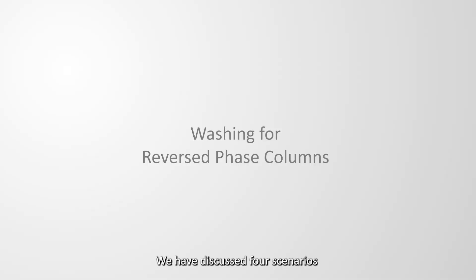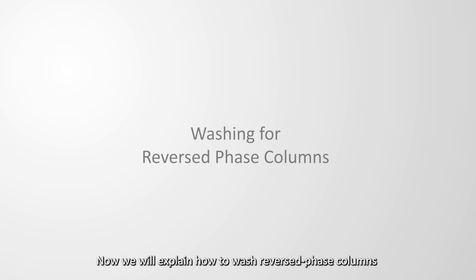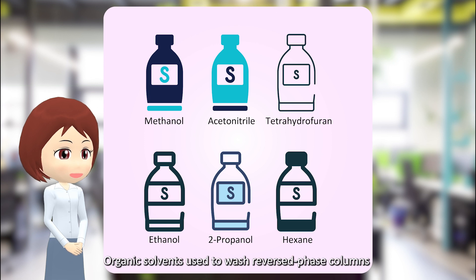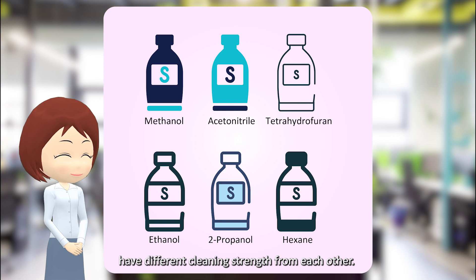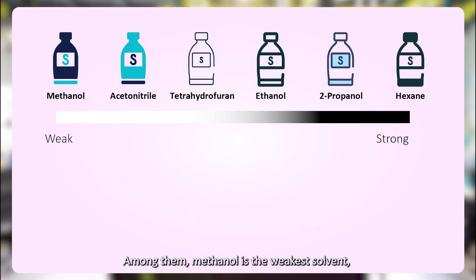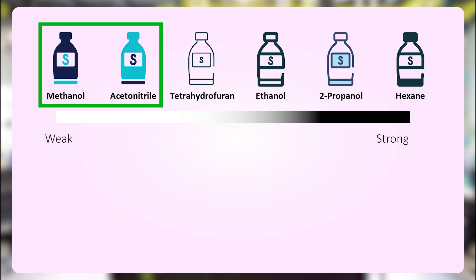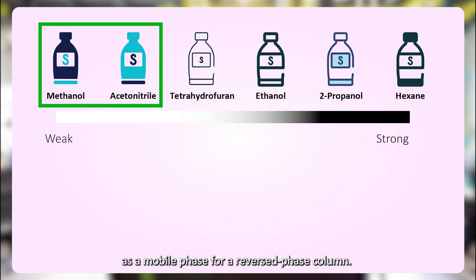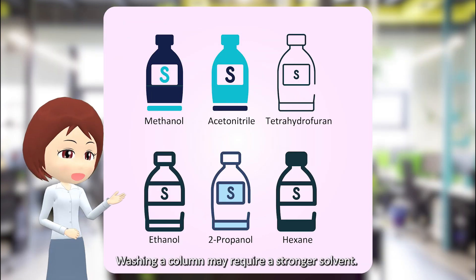We have discussed four scenarios where you should wash your columns. Now we will explain how to wash reversed phase columns such as C18 columns. Organic solvents used to wash reversed phase columns have different cleaning strength from each other. A weak solvent is usually used as a mobile phase for a reversed phase column, but washing a column may require a stronger solvent.